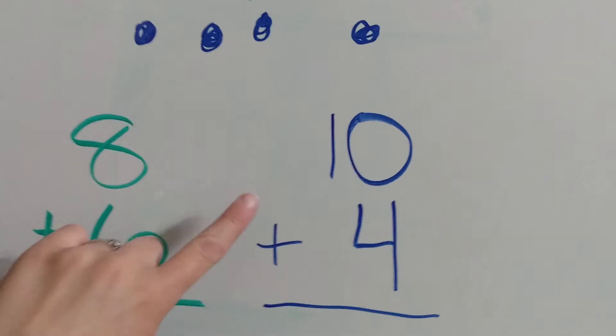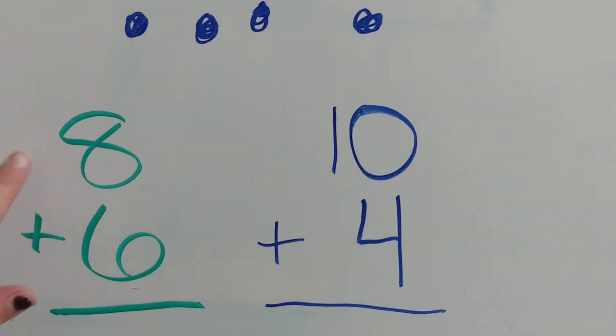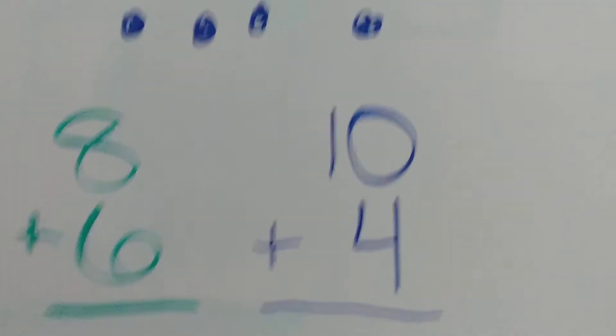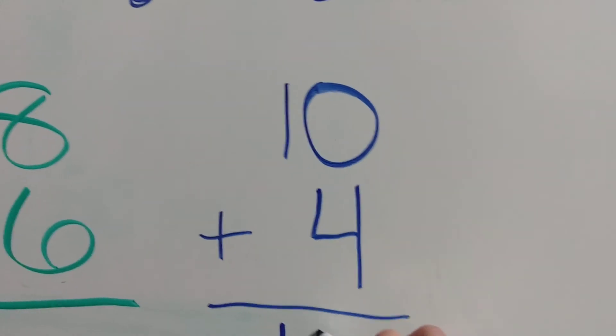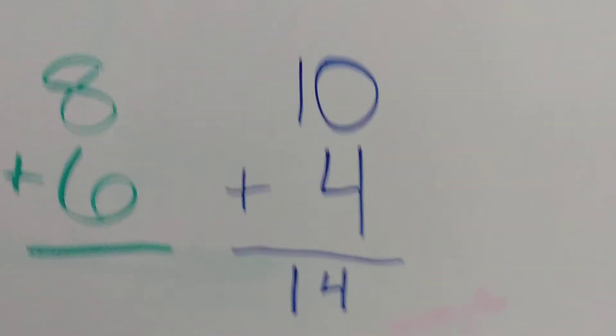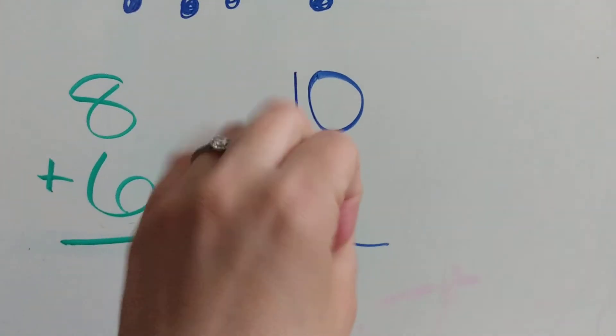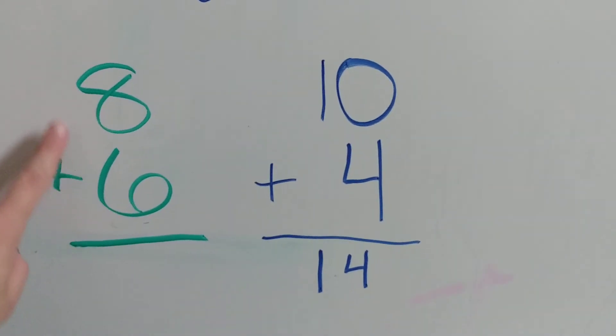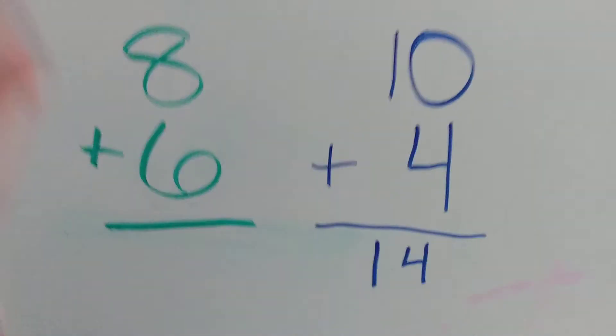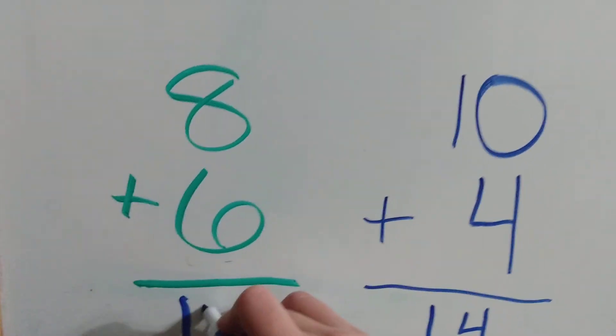And 10 plus 4 is a lot easier to solve than 8 plus 6. So we know 10 plus 4 equals 14 because you just grab that 10 and add 4 more. So which means we know that 8 plus 6 equals 14.